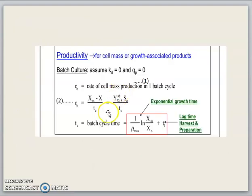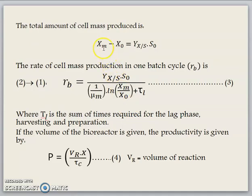After you substitute, you can see X_m minus X equals Y_X/S S_0. Substitute the value into the equation. That's why you get this equation number 3, where Tl is the sum of times required for the lag phase, harvesting, and preparation. If the volume of the bioreactor is given, then the productivity you can determine by using equation 4 here. Vr is the volume of the reactor during the reaction. It's not the volume that can be occupied in the reactor, but it's the volume that's being used during the reaction. It's the working volume.